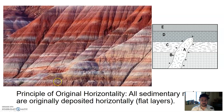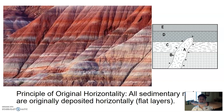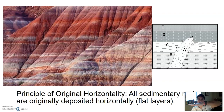The principle of original horizontality states that all sedimentary rocks are originally deposited horizontally — in flat layers. Therefore, if sedimentary rocks have been tilted, that tilting came later. First the sedimentary rock was deposited, then it was tilted.